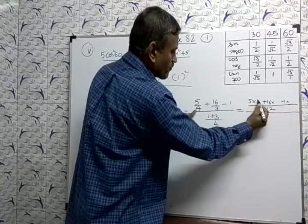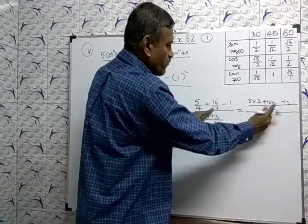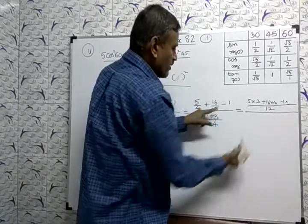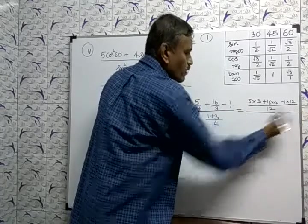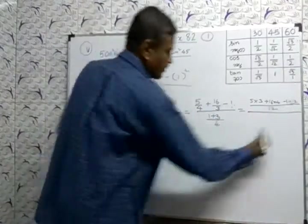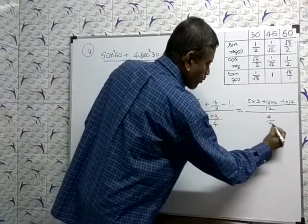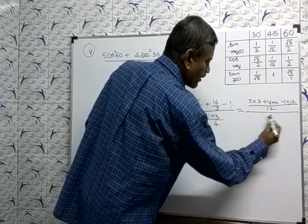So 3 multiplied. Here 3 is there, here 4 times. Here nothing means what is there, 1 is there, 1, 12 is 12. Downside 4 by 4, which you can cancel and write 1.